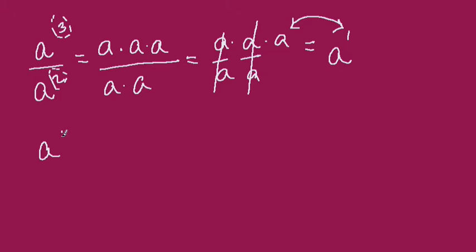So we can take a general case here, a to the m divided by a to the n. That will have to equal a to the m minus n. And that's a critical law here to deal with some of these problems. So let's look at a few.